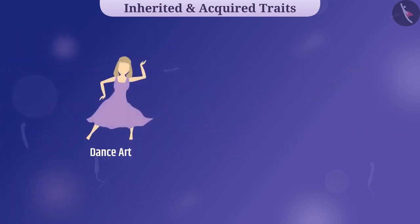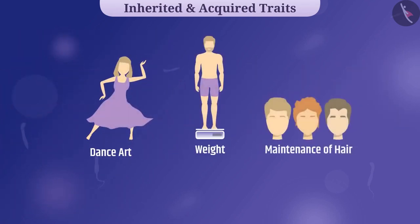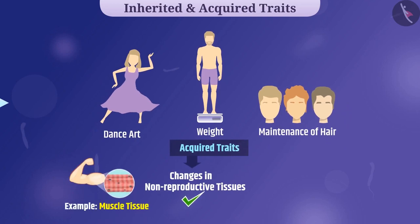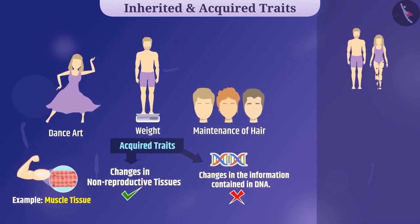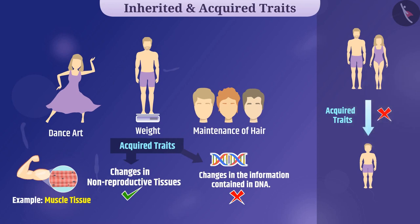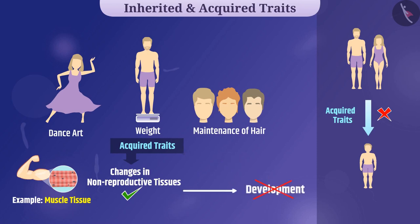Traits like dance art, weight, and maintenance of hair, which the organism acquires during their lifetime, are called acquired traits. Acquired traits lead to changes in non-reproductive tissues but do not cause changes in DNA of the gametes. Hence, there is no inheritance of acquired traits from one generation to the next. Since acquired traits are not inherited, we cannot call development of tissues from acquired traits as evolution — these traits do not lead the organism to evolution.